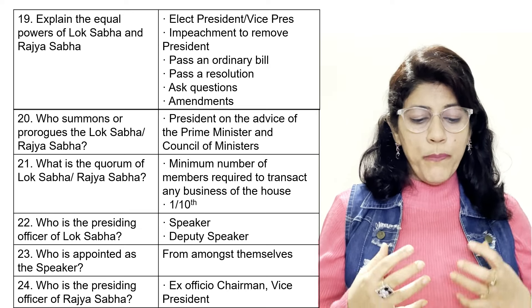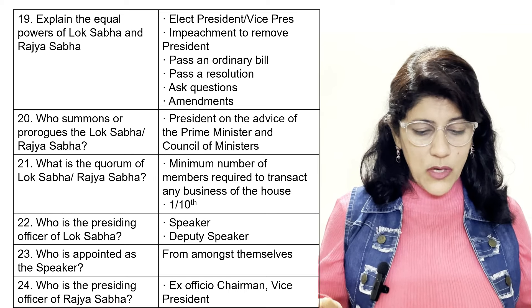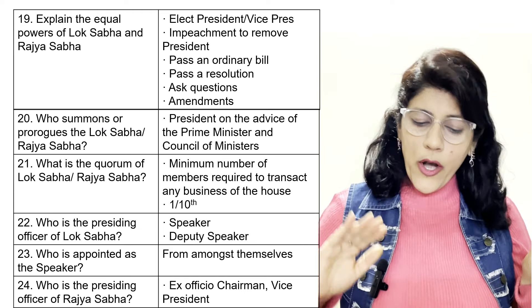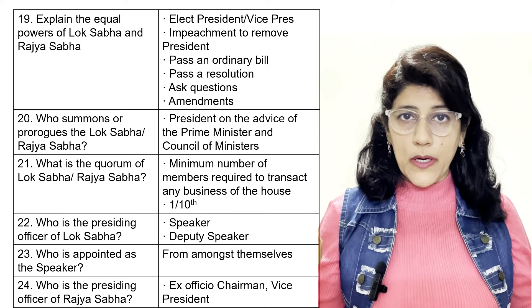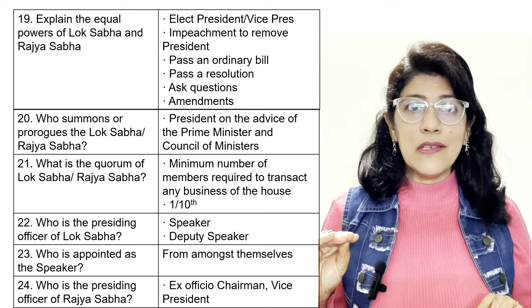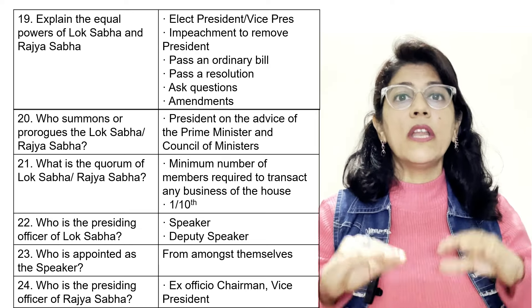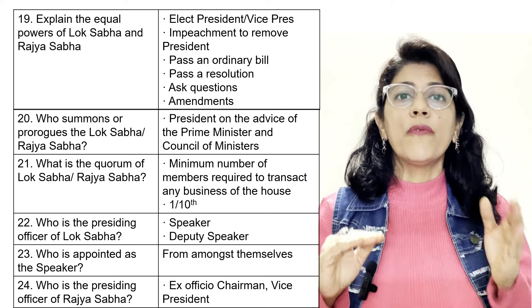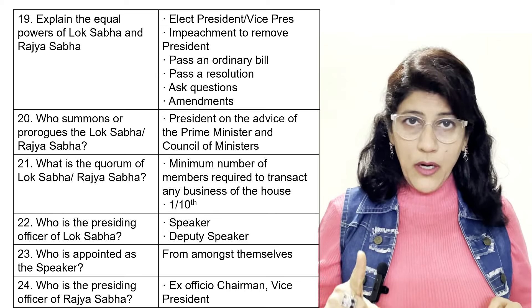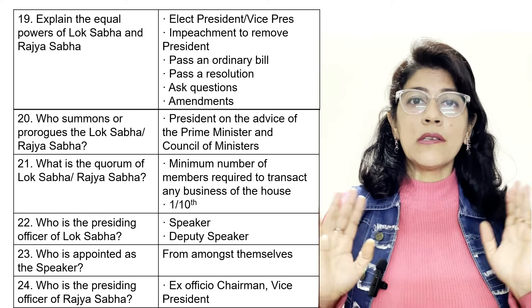Who summons or prorogues the Lok Sabha or Rajya Sabha? The President on the advice of the Prime Minister and Council of Ministers. What is the quorum of Lok Sabha or Rajya Sabha? The minimum number of members required to transact any business of the house — one-tenth of the total membership. So if 250 members, quorum is 25; if 550 members, quorum is 55.